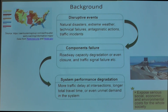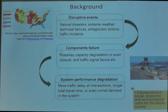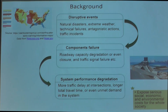Links are road sections between intersections or between ramps, and nodes can be intersections. Failure of components could be roadway closure or roadway capacity degradation. Node failures, for example, could be traffic signals failing after a thunderstorm or flooding from a hurricane. All such component failures lead to system performance degradation — more traffic delay at intersections, longer travel time, or even unmet demand — exposing high social, economic, and environmental costs to our society.